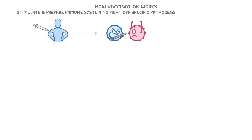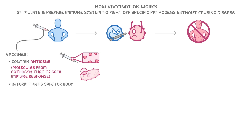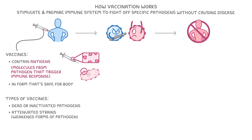So let's move on and see how vaccination works. Vaccines are designed to stimulate and prepare your immune system by getting it ready to fight off specific pathogens without actually causing disease. Vaccinations can do this because vaccines contain antigens, which are molecules from the pathogen that trigger an immune response in a form that's safe for the body. There are various types of vaccines, including those made from dead or inactivated pathogens, attenuated strains which are just weakened forms of the pathogen, harmless toxins, or isolated and genetically engineered antigens.